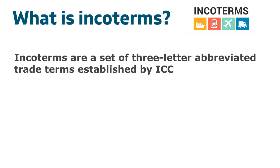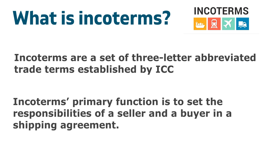In international commerce, incoterms are a set of three-letter abbreviated trade terms established by the International Chamber of Commerce, the ICC, to communicate different aspects of cross-border trade. There are 11 main incoterms in use. Incoterms' primary function is to set the responsibilities of a seller and a buyer in a shipping agreement. For both Alibaba.com sellers and buyers, it is important to familiarize yourself with the details of each incoterm, so you can choose the one that makes the most sense for your next shipment.